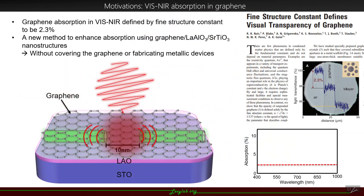Today I'm going to talk about a new method we have to enhance the absorption of graphene in the visible near-infrared, using graphene lanthanum aluminate strontium titanate, or LAO-STO nanostructures. We can increase the graphene absorption without covering the graphene at all or creating complicated metallic devices.